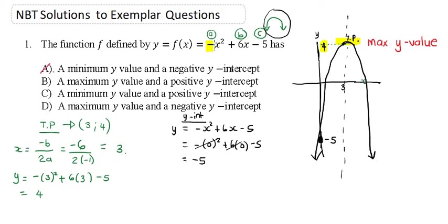So wherever it says minimum y value just cross it out because those answers don't apply. And is it a positive y-intercept or a negative y-intercept? Well if you look at this -5 here, the y-intercept meaning the graph is cutting the y axis at a minus number, so we've got a negative y-intercept. So we've determined it's a negative y-intercept and a maximum y value, which means B is not in the picture and the final answer is D.